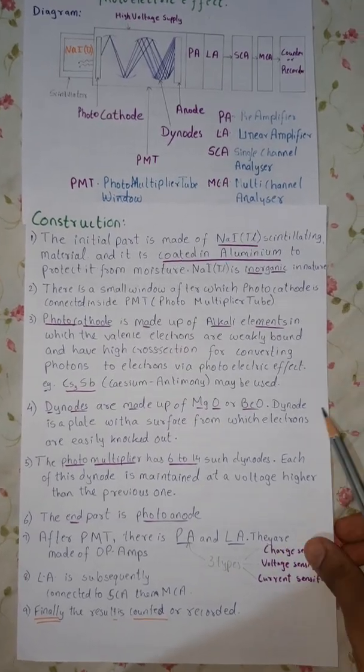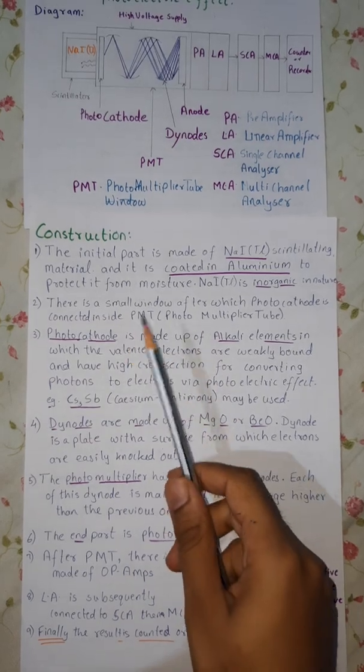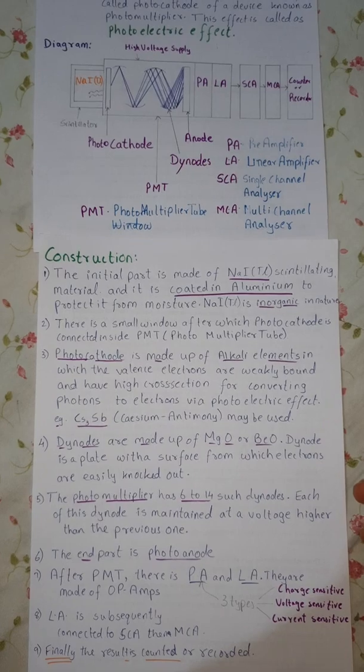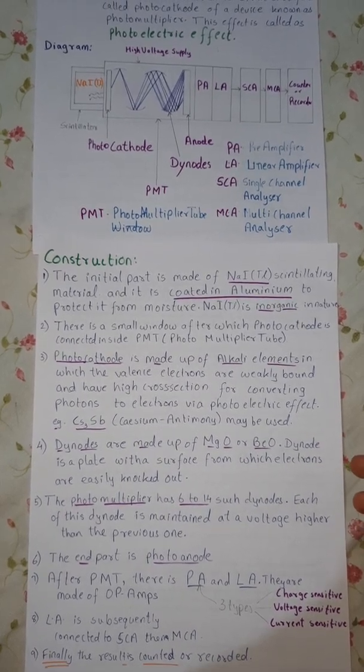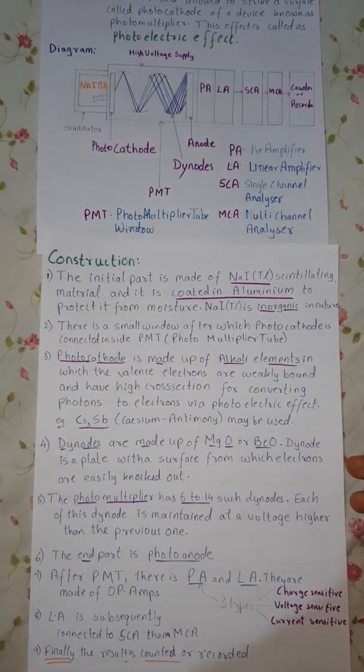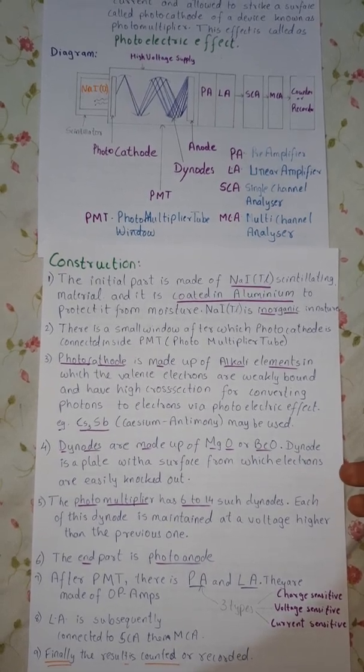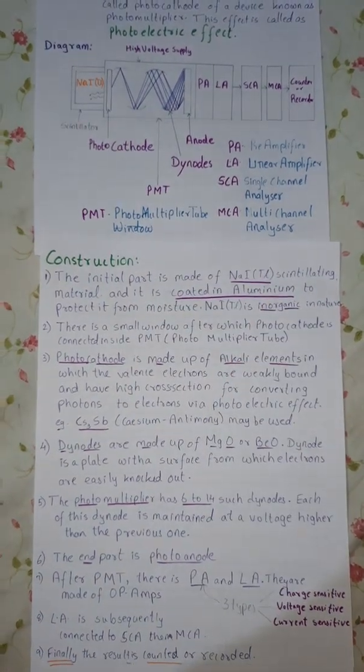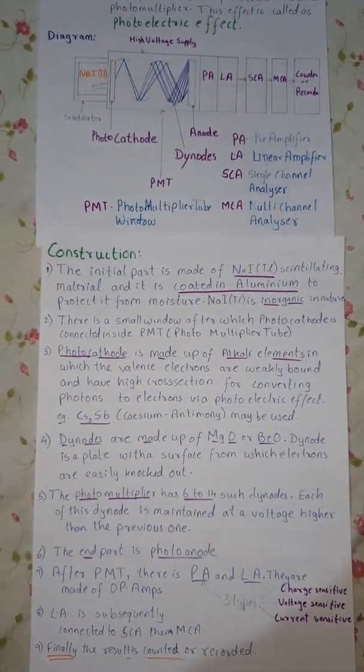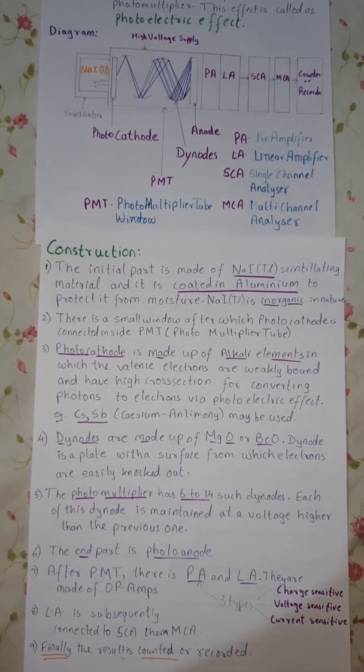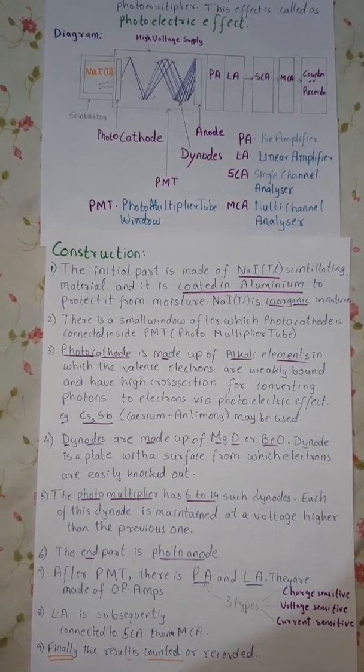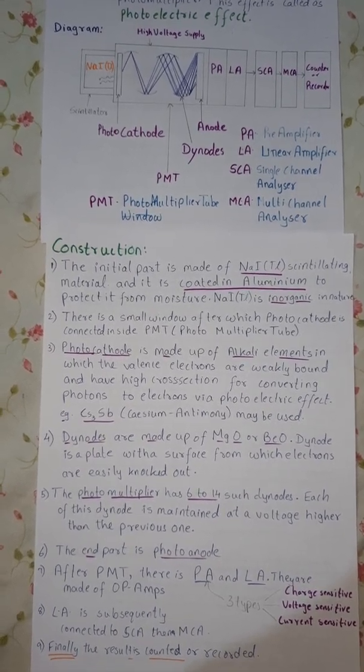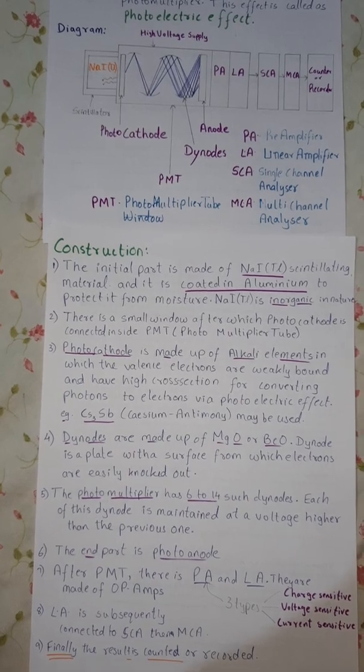Let us see the construction. The initial part of NAITL scintillating material is coated in aluminum to protect it from moisture. This is inorganic in nature. There is a small window present right over here. This window after which photocathode is connected inside PMT.